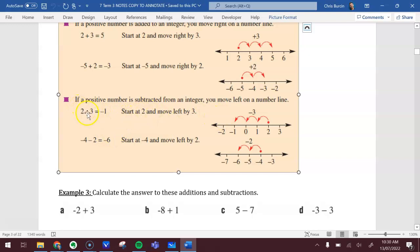Start at 2, 2 minus 3, take away 3. We start at 2, and we do 1 hop to 1, another hop to 0, and then another hop to negative 1. So 2 minus 3 is negative 1.